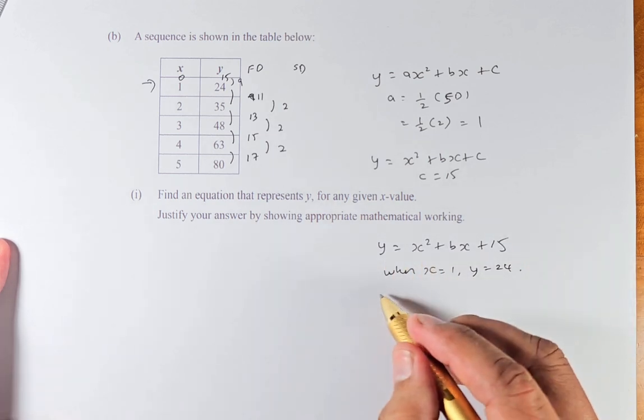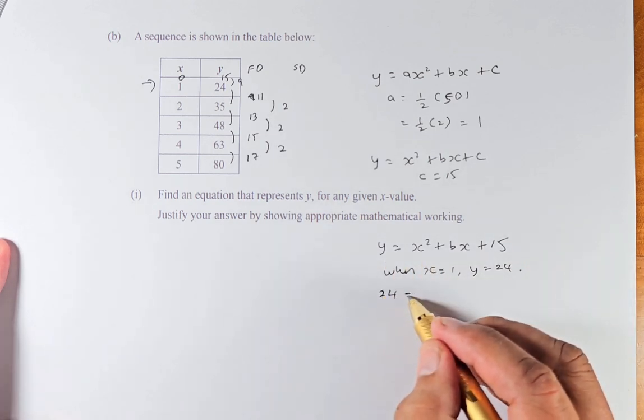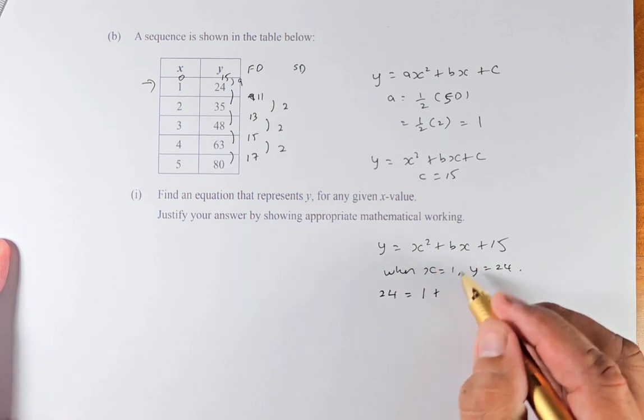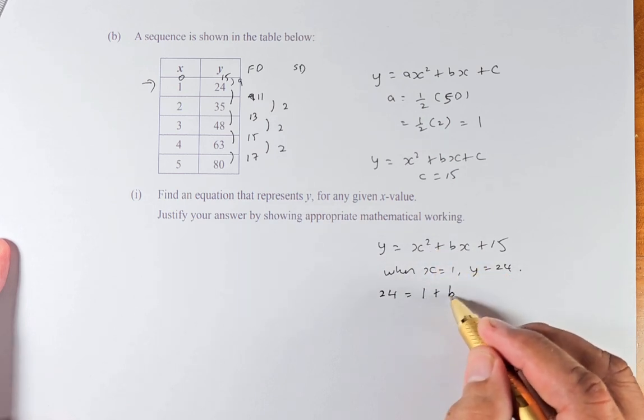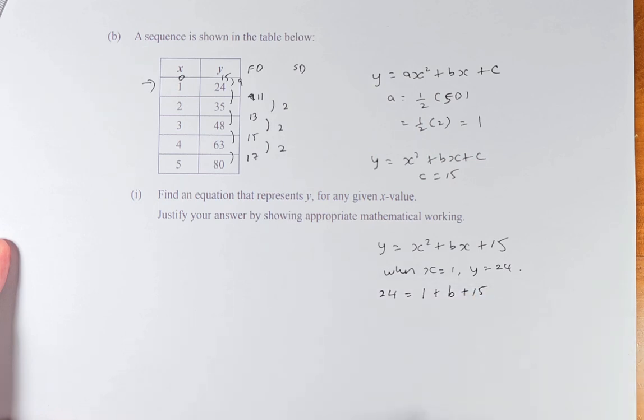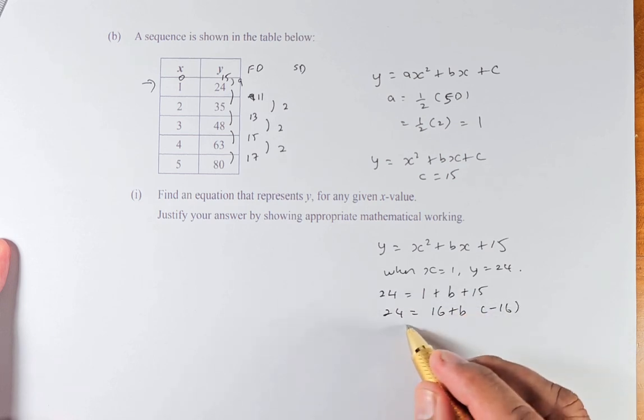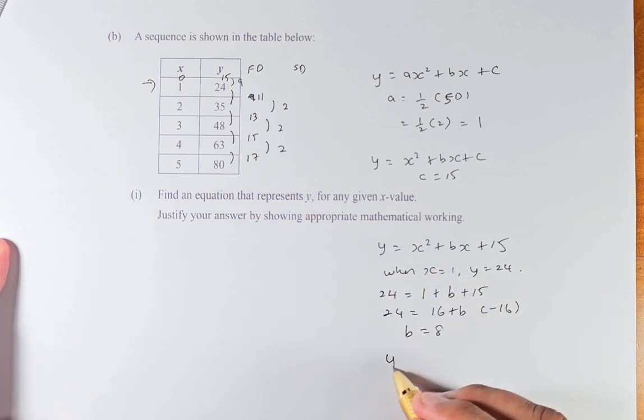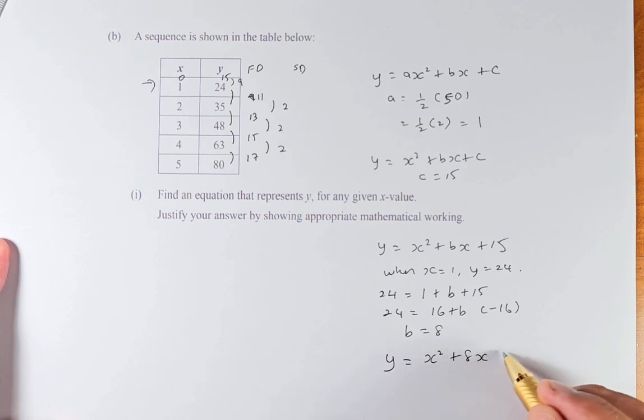y is 24 when x equals 1. So 1 squared is 1 plus b times 1 is b plus 15. So 24 equals 1 plus 15, which is 16, plus b. Minus 16 on both sides gives b equals 8. Once you find b equals 8, put that into the equation. Your final equation is y equals x squared plus 8x plus 15.